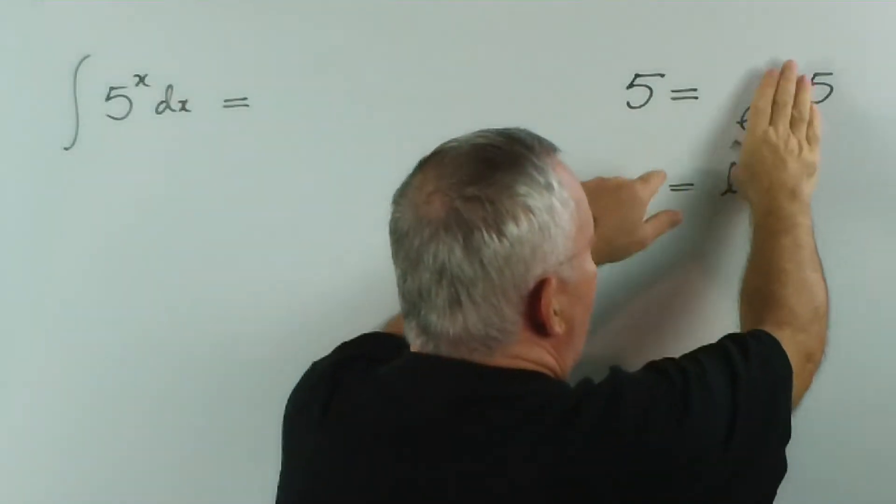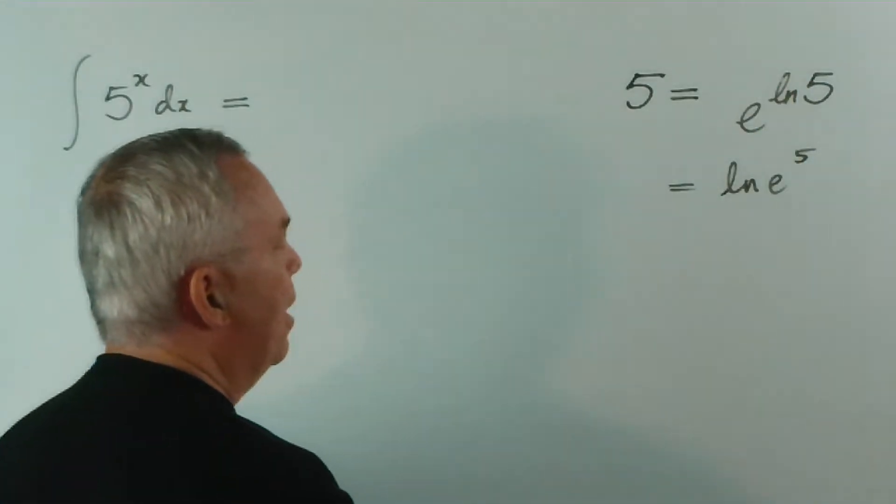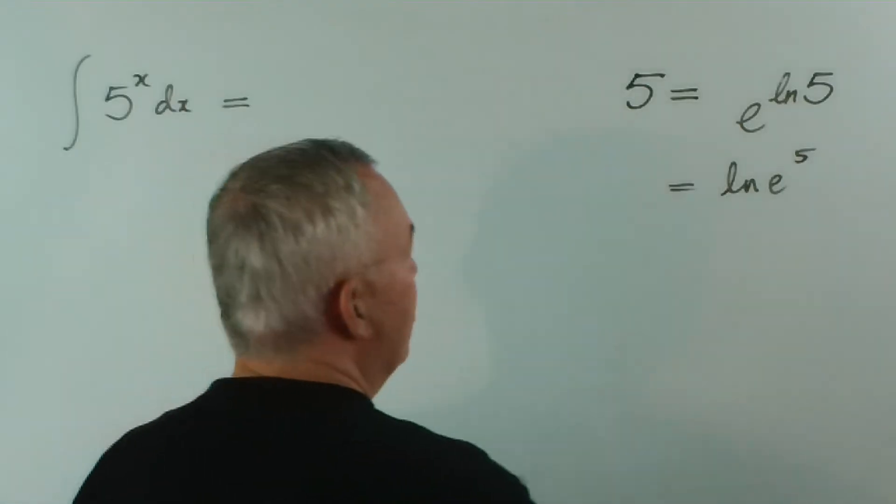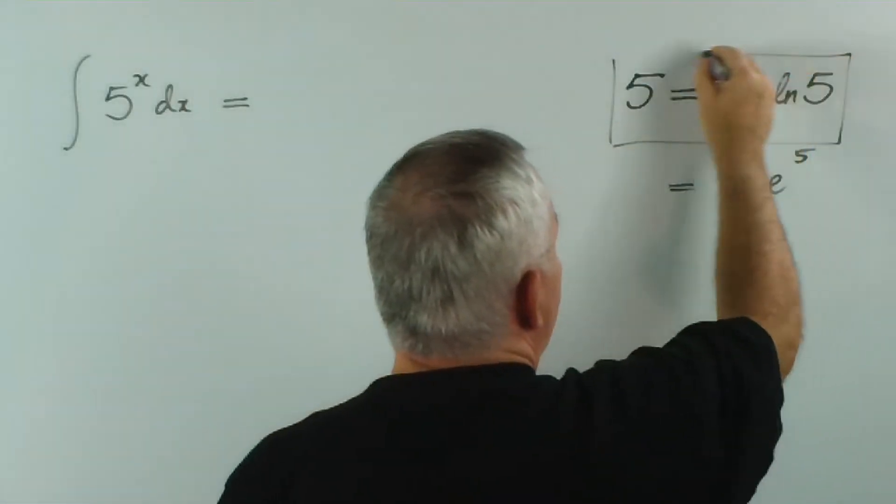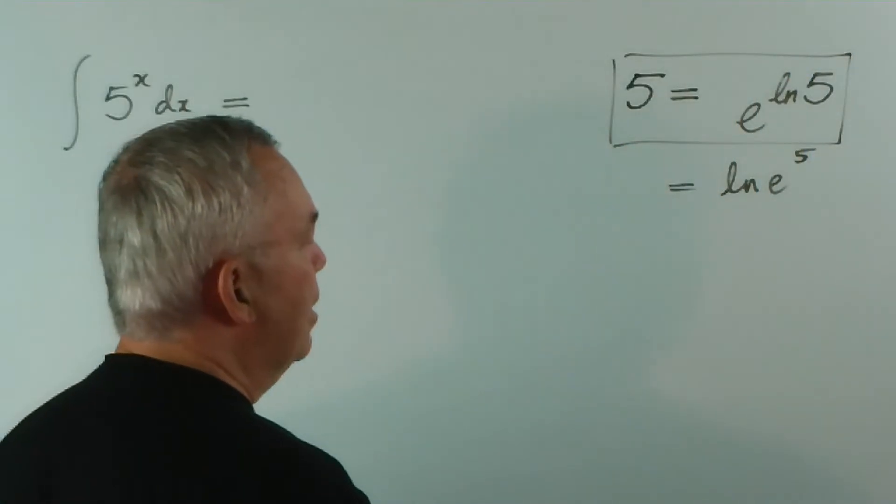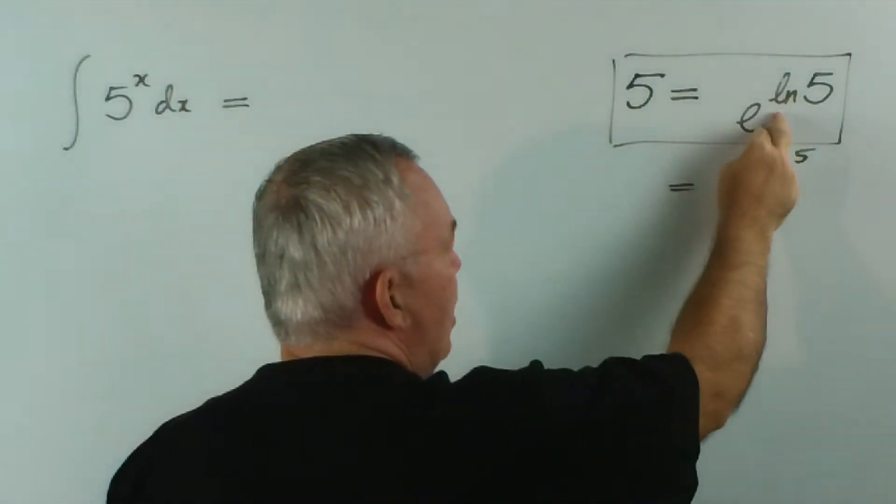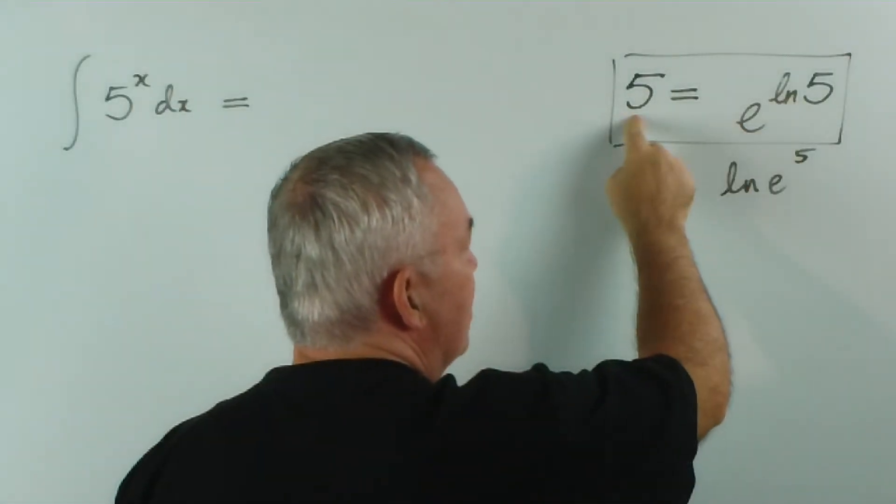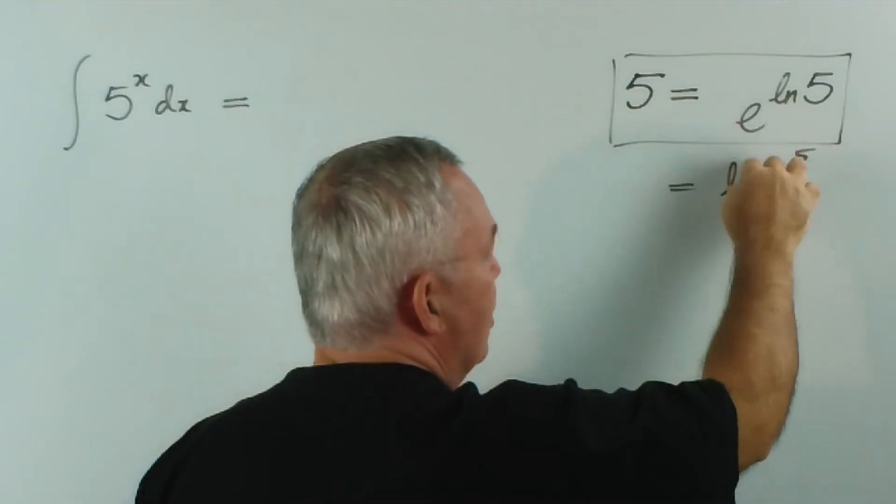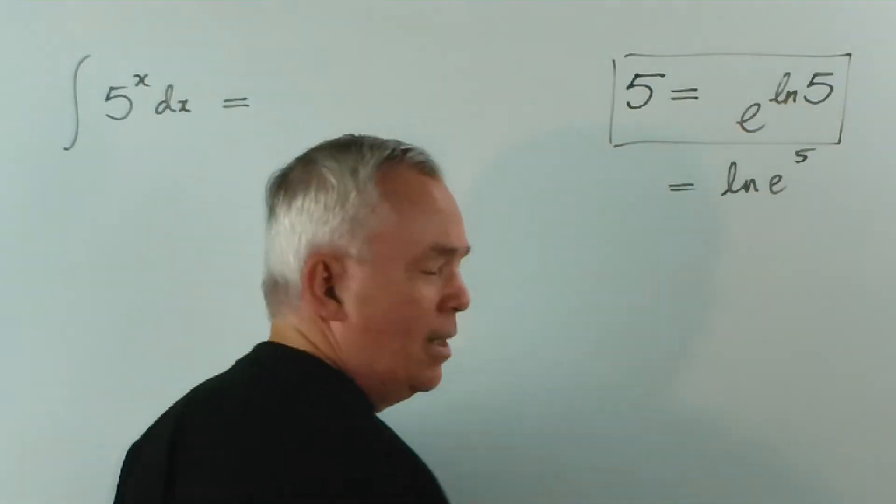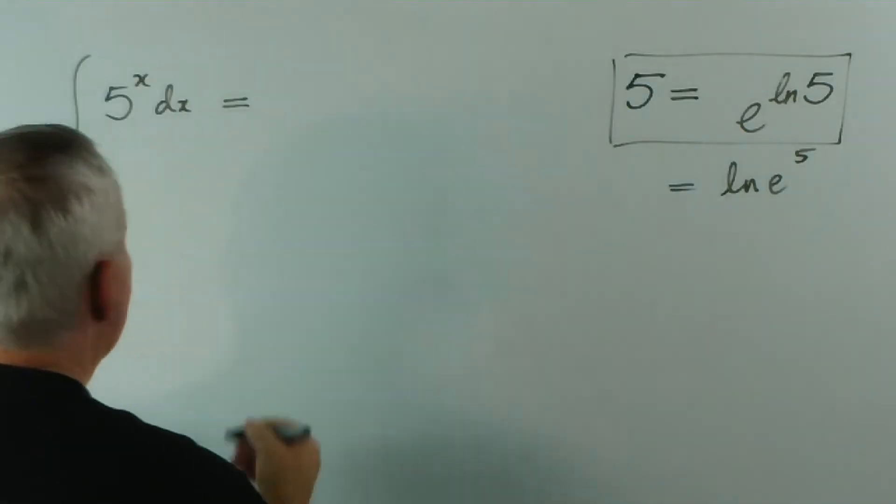So 5 equals 5, 5 equals 5. Which substitution will be useful for us? It'll be this one. You just need to know this trick: that any number, if you want to convert it into an exponential, is the exponential of the logarithm of that number.